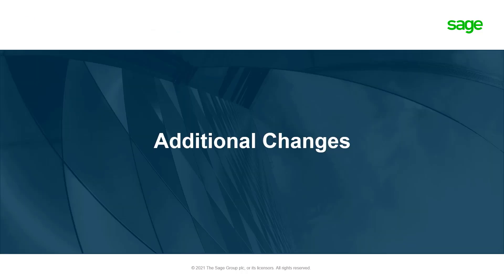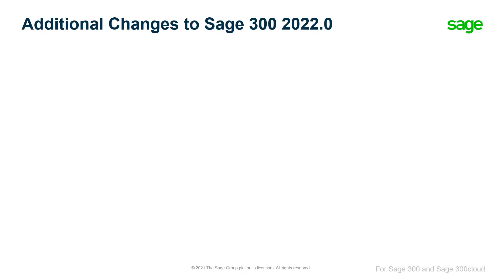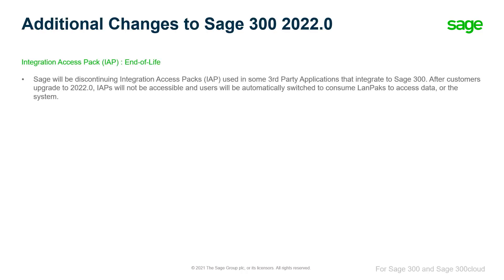Finally, let's review some additional information about Sage 300 2022.0. Sage will be discontinuing Integration Access Packs (IAP) used in some third-party applications that integrate to Sage 300. After customers upgrade to 2022.0, IAPs will not be accessible and users will be automatically switched to consume Landpacks to access data or the system.